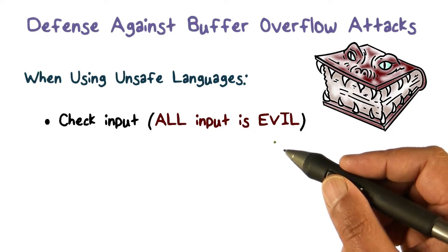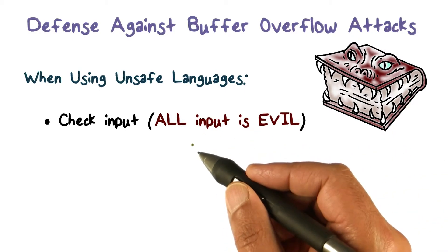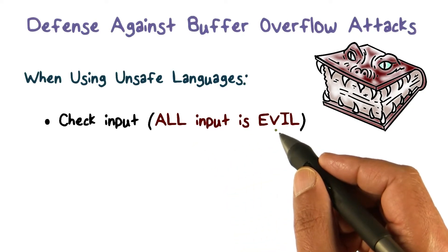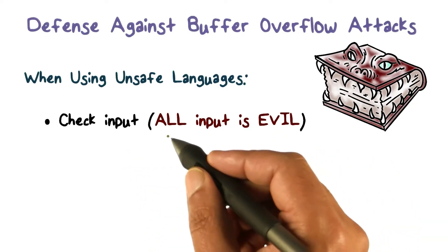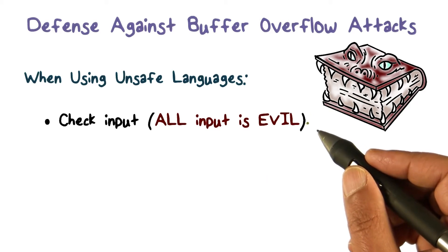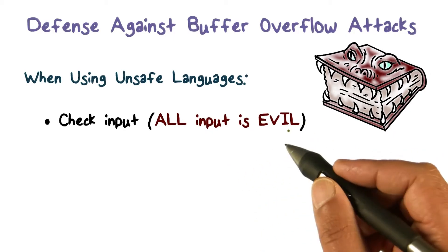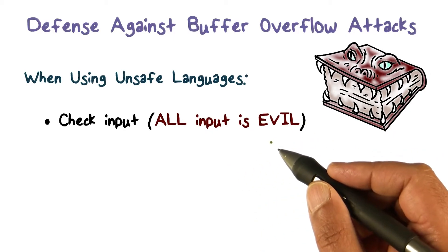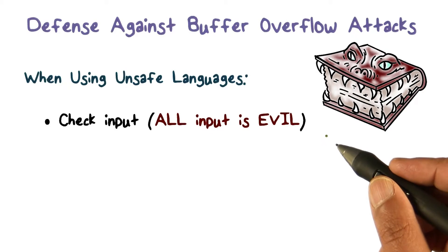One way you can do that is by checking all input. The secure coding mantra is: trust no input. All input is evil, and you should be checking that it conforms to whatever your expectation was. Don't rely on the underlying system to do that, because we're talking about using languages that do not do it automatically.